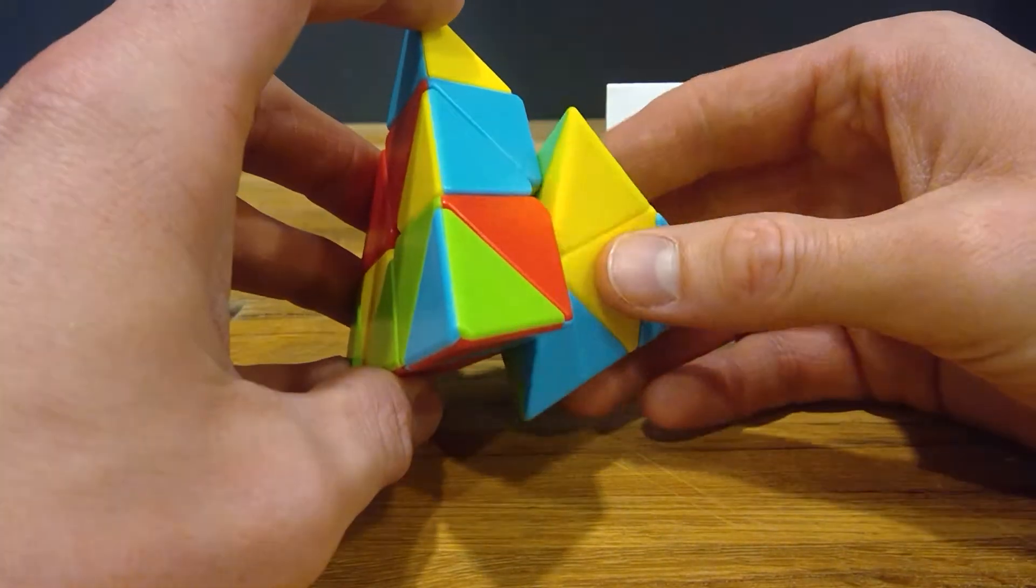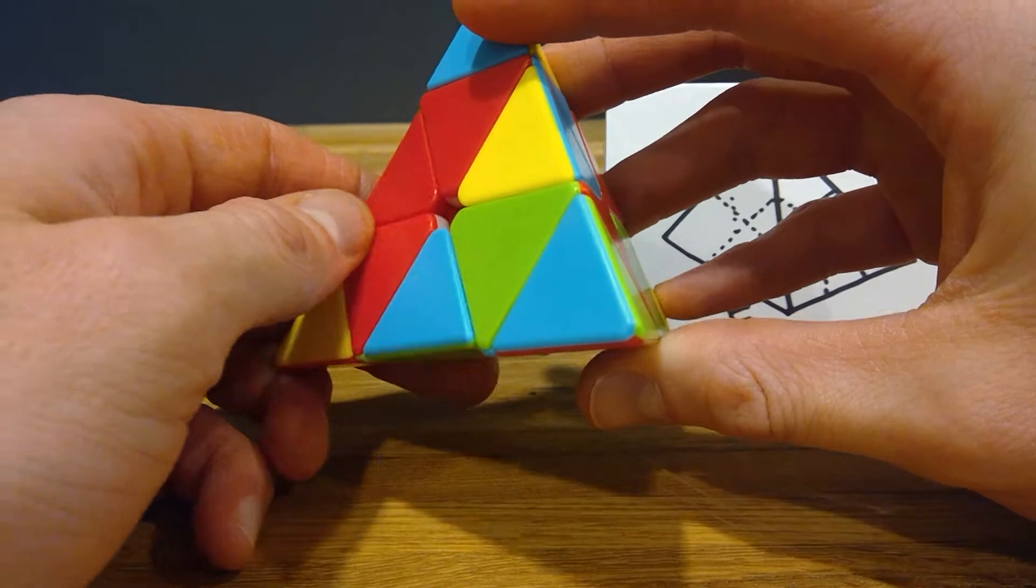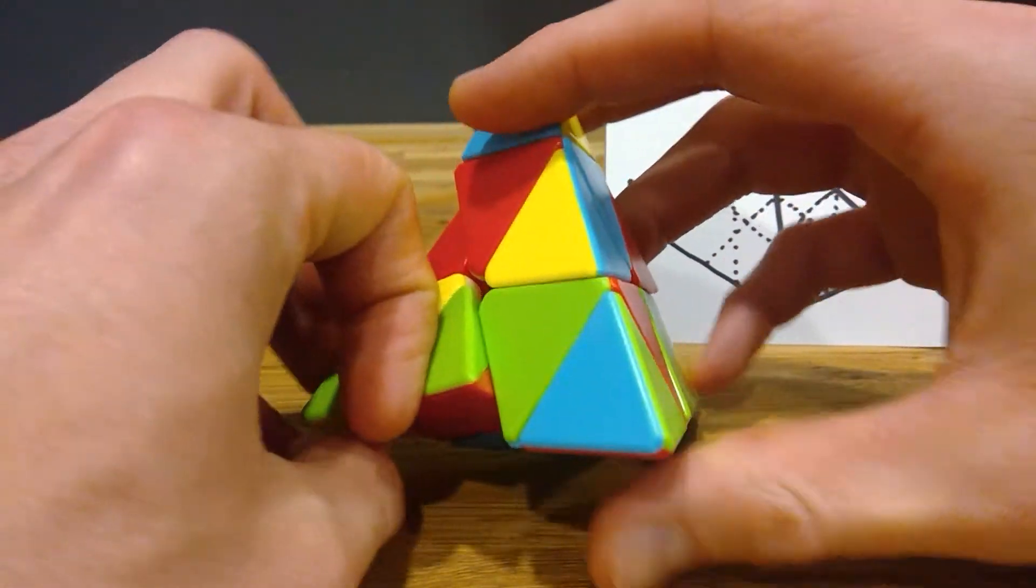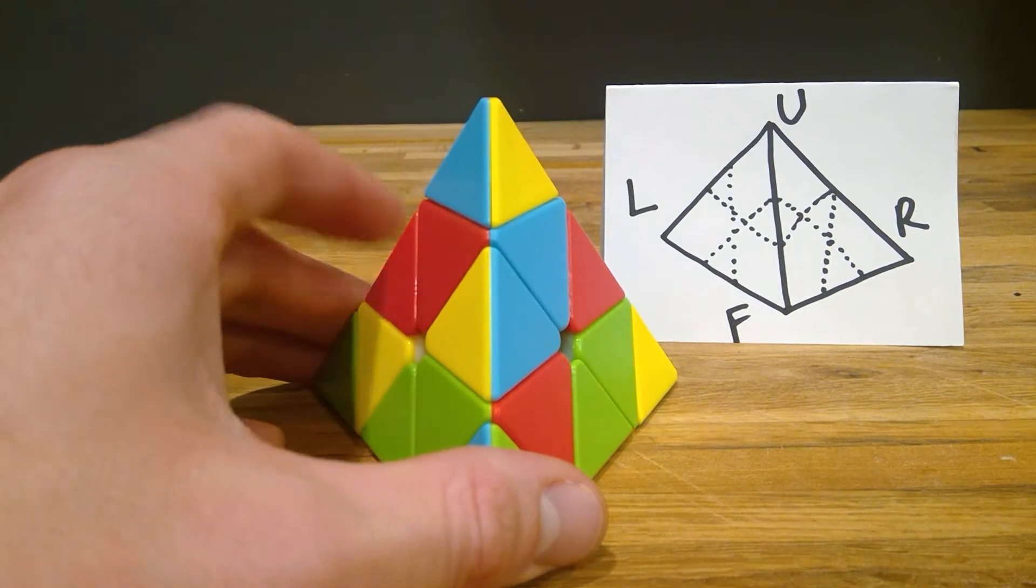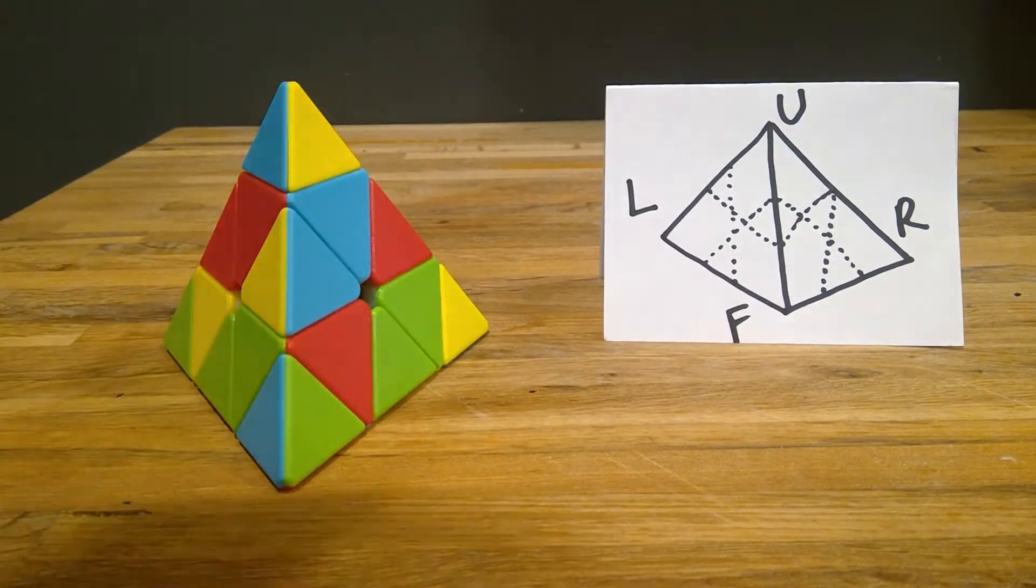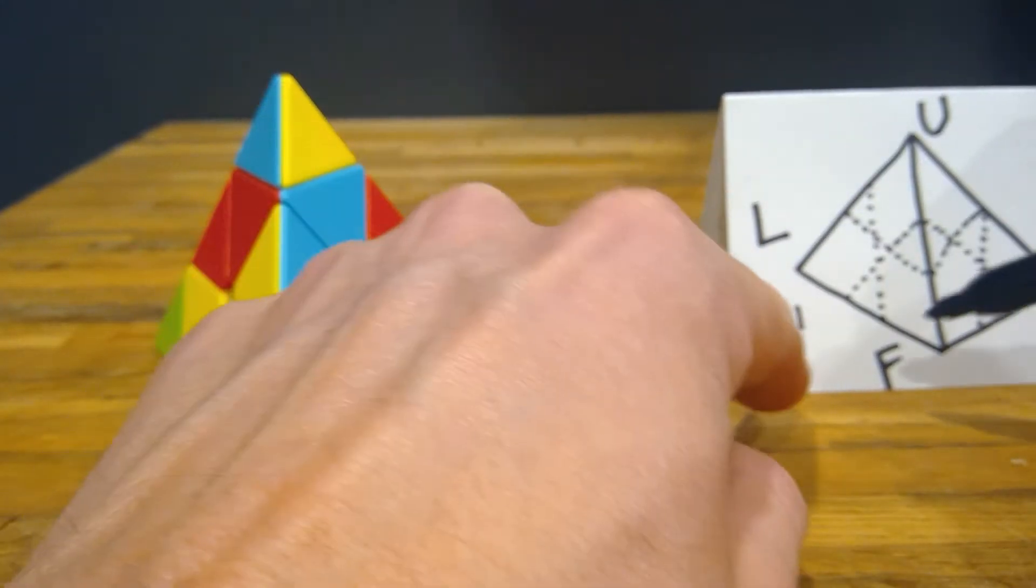This would be the front. Turning the front clockwise would be regular F. Turning the front counterclockwise would be F prime, like this. This would be right. Right clockwise, right counterclockwise. Left clockwise, left counterclockwise. And then lastly, up clockwise, and up counterclockwise.